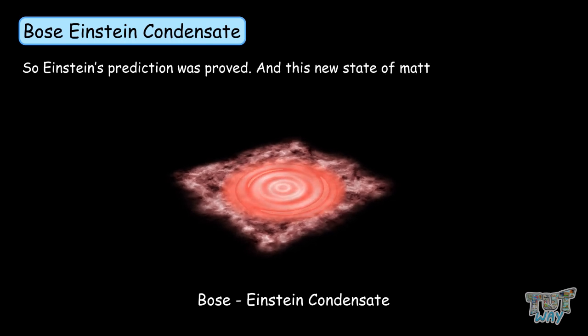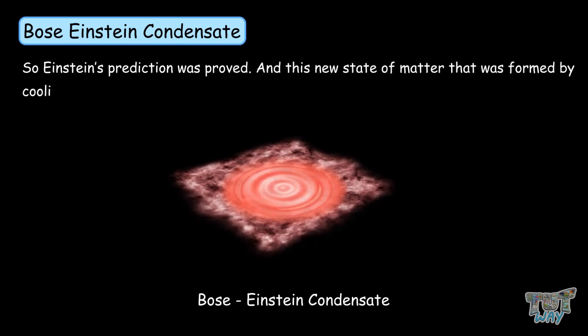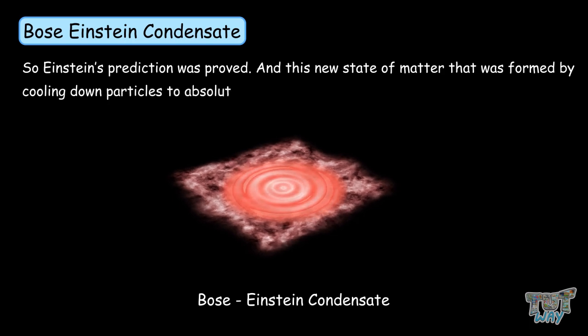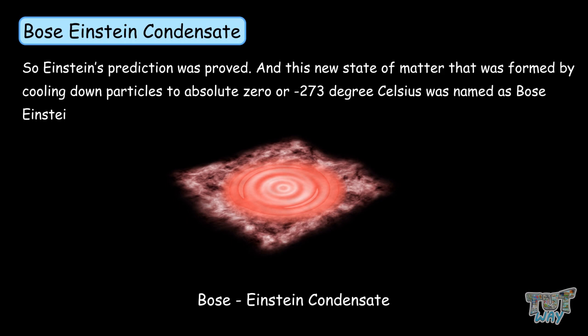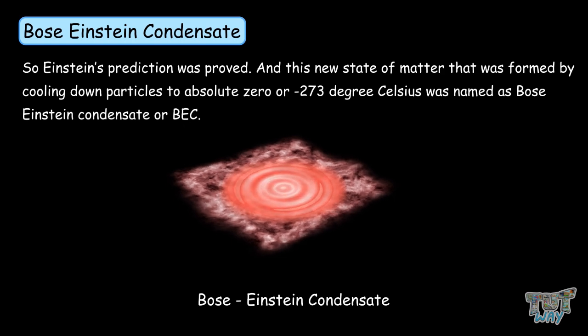This new state of matter that was formed by cooling down particles to absolute zero, or negative 273 degrees Celsius, was named as Bose-Einstein condensate, or BEC.